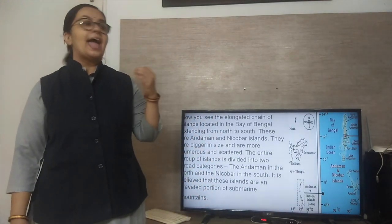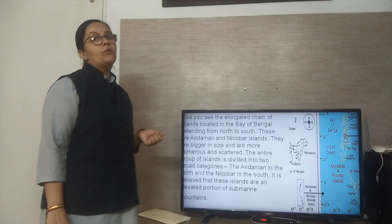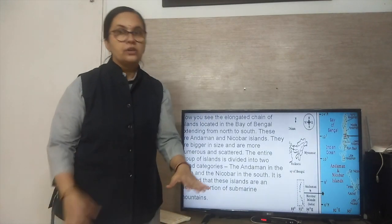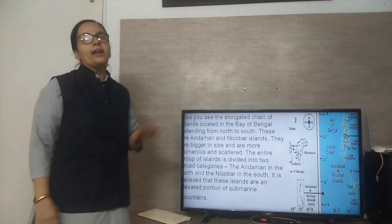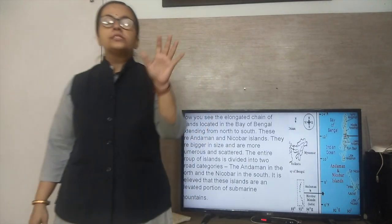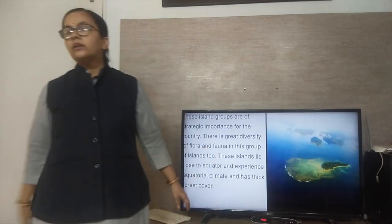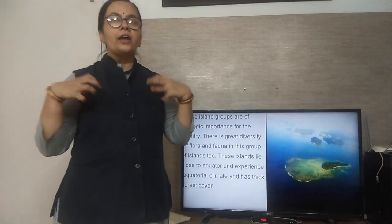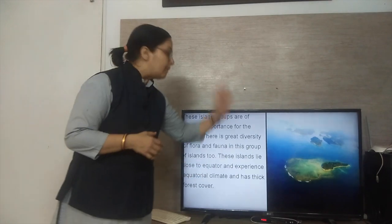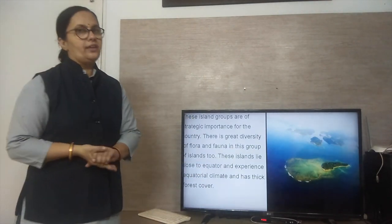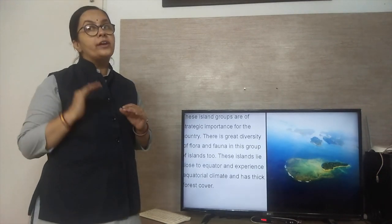It is believed that these islands are an elevated portion of submarine mountains — some mountains are submerged in the Bay of Bengal, and the top parts of these mountains form the islands, which is why the Andaman and Nicobar Islands are considered an elevated portion of submarine mountains. This island group is strategically very important due to great diversity of flora and fauna, and being close to the equator, it experiences an equatorial climate with very thick forest cover. The rainfall here is more than 200 centimeters.